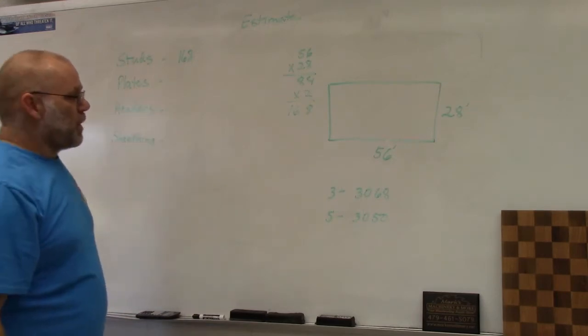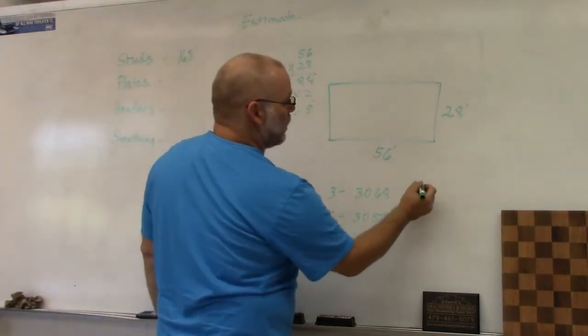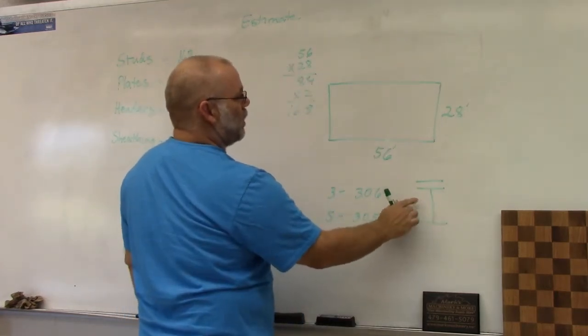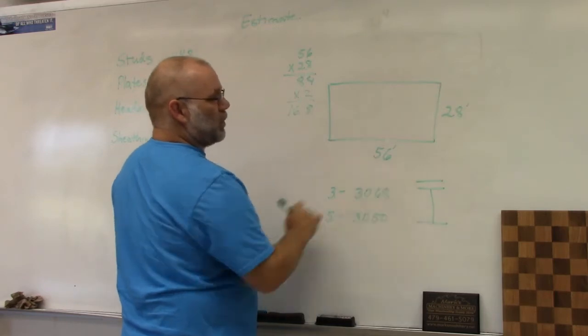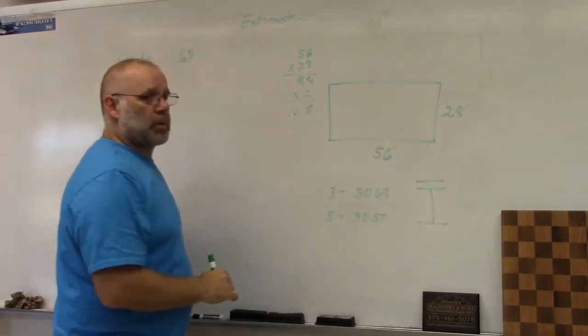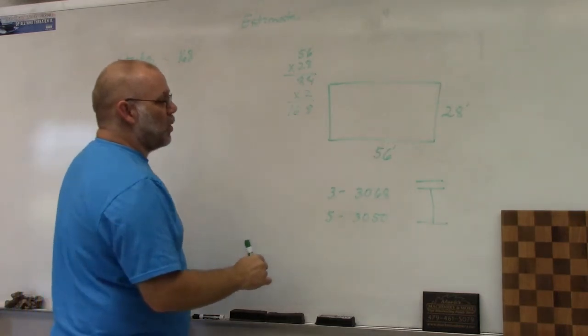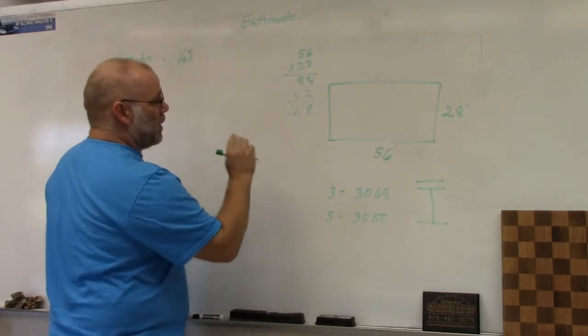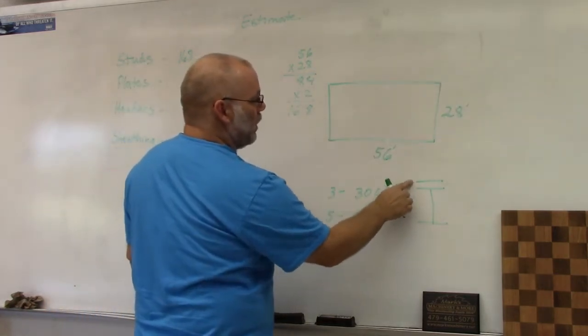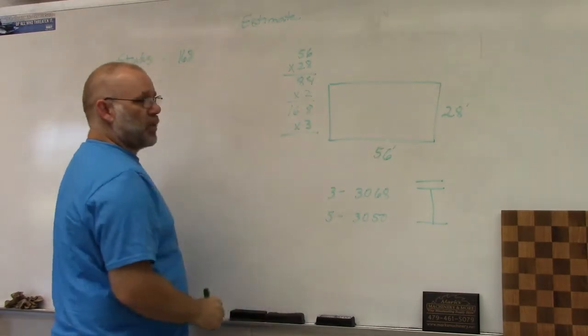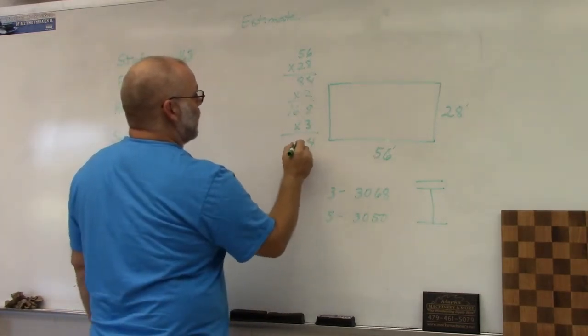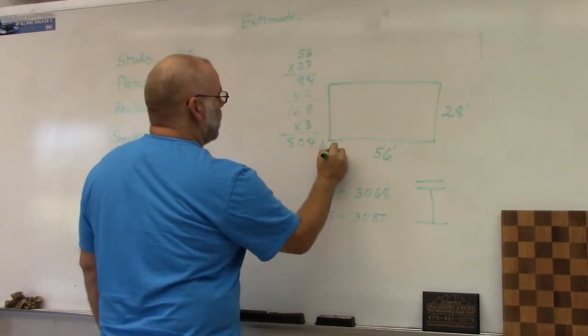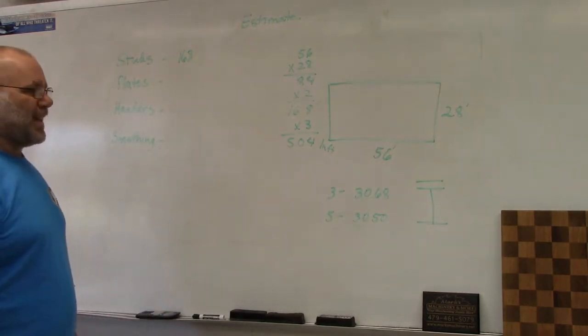For plates, in a wall makeup you have a bottom plate, studs, a top plate, and a double top plate, and they go all the way around the building on the outside. We're going to take the linear feet we figured in the previous question and multiply it times three for three plates. That's 504 linear feet of plates.